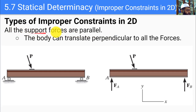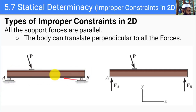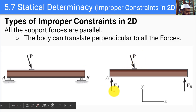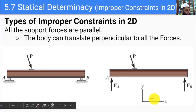The second type is when all support forces are parallel. In two dimensions, the body can always translate in the direction perpendicular to all support forces. For instance, a girder on two rollers with an applied force P: the vertical component of P is cancelled by the roller reactions, but the horizontal component cannot be cancelled because no support reaction acts along the x-axis.